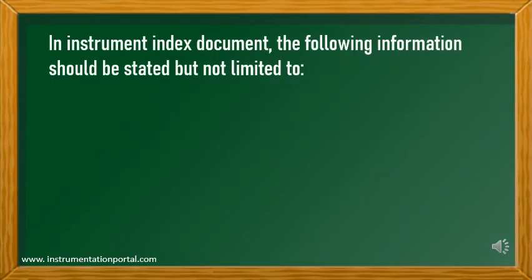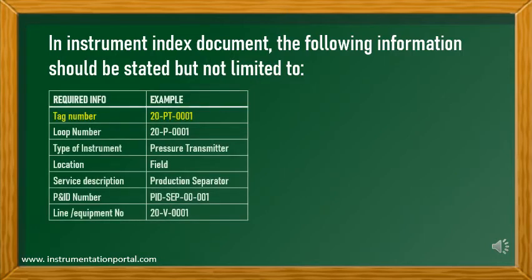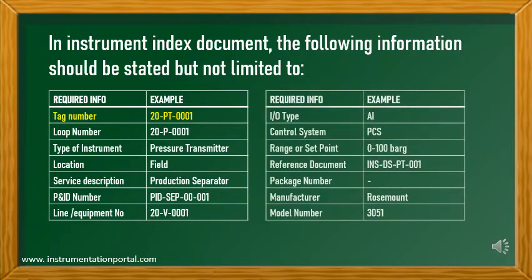In the instrument index document, the following information should be stated but not limited to: tag number, loop number, type of instrument, location, service description, P&ID number, line number or equipment number, input/output type, control system, range or set point along with engineering unit used, applicable reference documents such as instrument data sheet number, hook-up drawing number, instrument layout number, loop drawing number, package number, manufacturer, and model number.